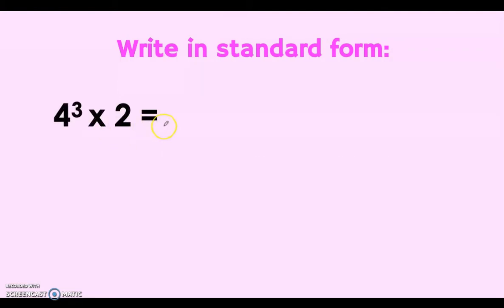Let us also transform into standard form. We have 4 to the power of 3, times 2. To get the standard form, multiply 4 times 4 times 4, then multiply the result by 2. So 4 times 4 is 16, times 4 is 64, times 2 gives us the answer: 128.